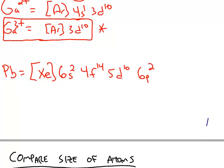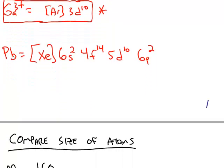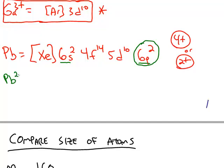When we predicted the charge for lead, lead was either going to make a positive 4 or a positive 2 cation. And so looking at the spectroscopic notation for lead, the largest value of n comes from the 6s and the 6p. The first electrons are going to come out of the 6p, so when we make the lead 2+ cation,